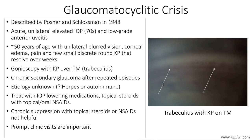Blurring of the vision and halos occur when corneal edema is present secondary to the elevated IOP. The iris may become ischemic due to extreme IOP elevation and the pupil may be mid-dilated. The conjunctiva is often unremarkable. Gonioscopy reveals normal angle anatomy except for sparse inflammatory debris.